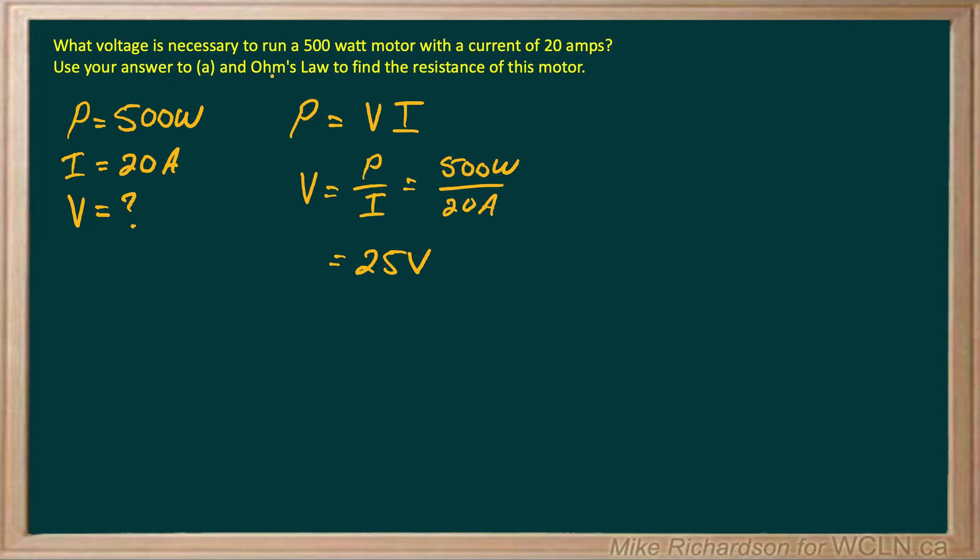Now in the second part, it says use Ohm's law to find the resistance of this motor. So when I use Ohm's law, it's just V is equal to IR.